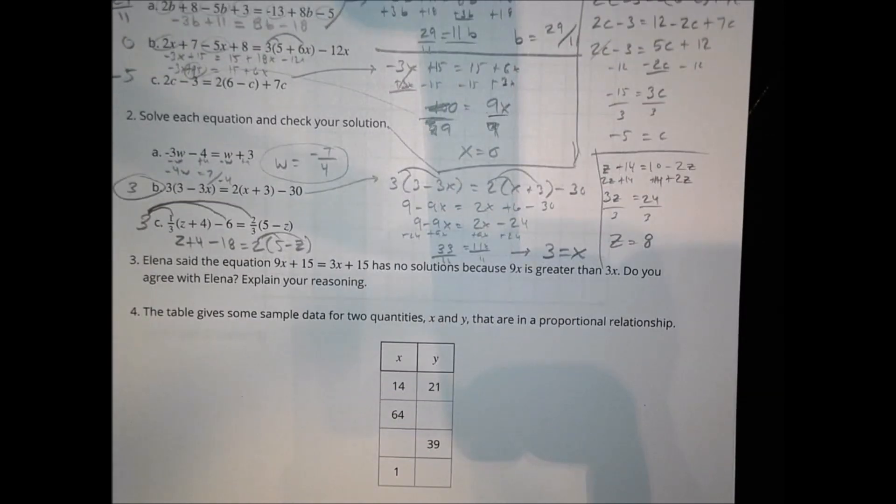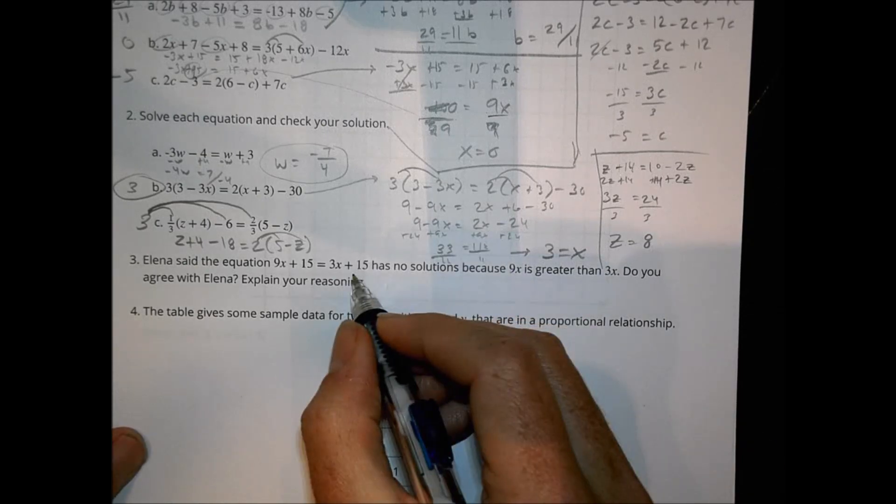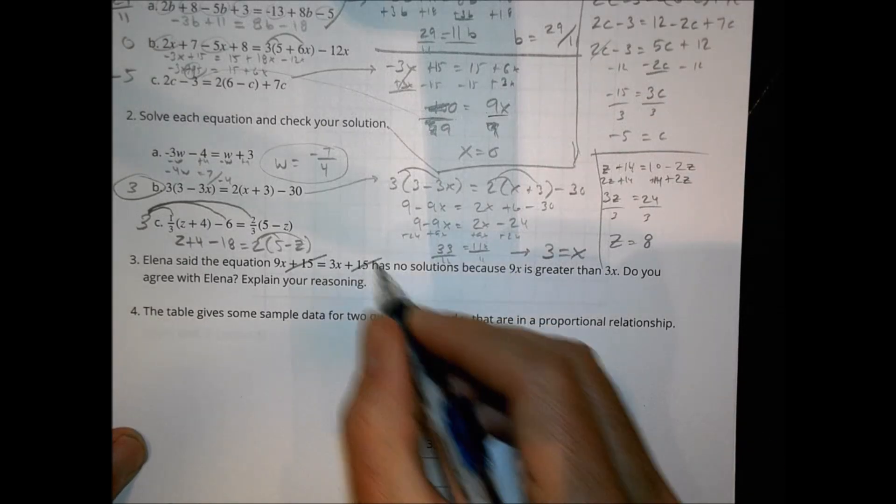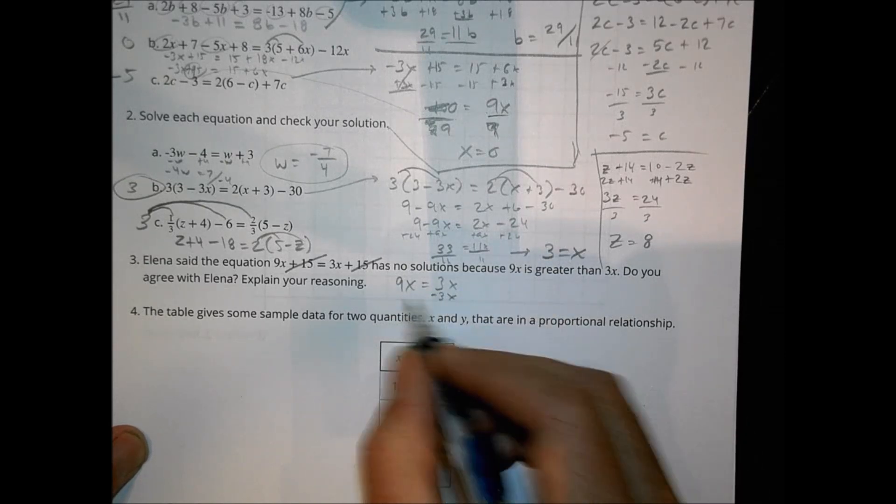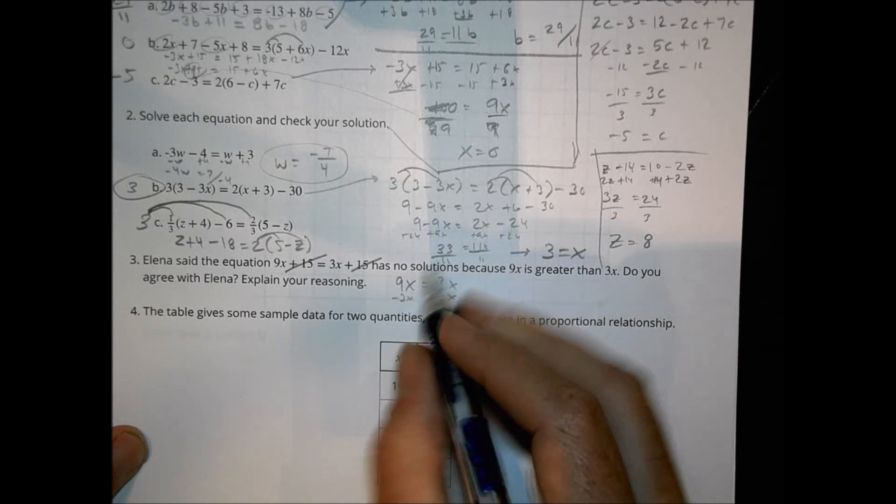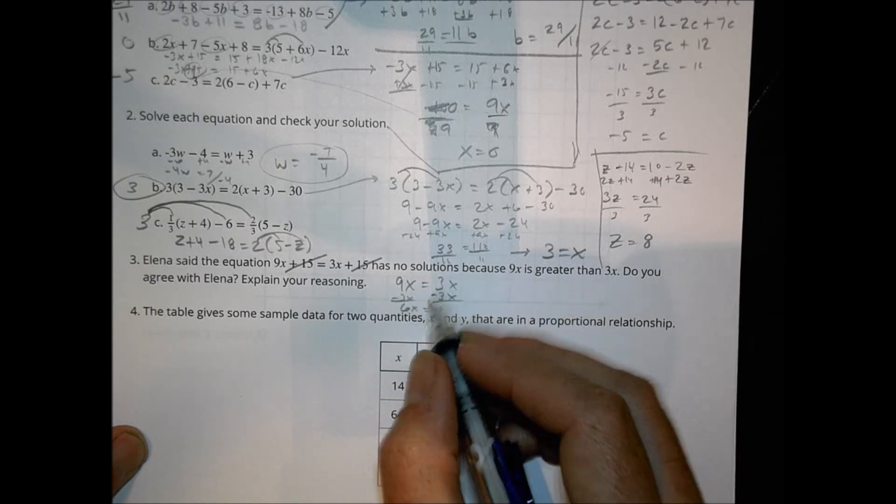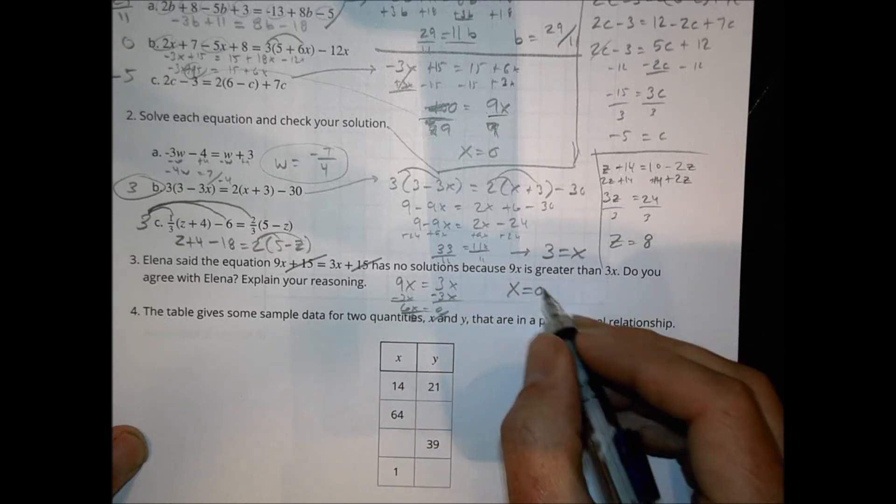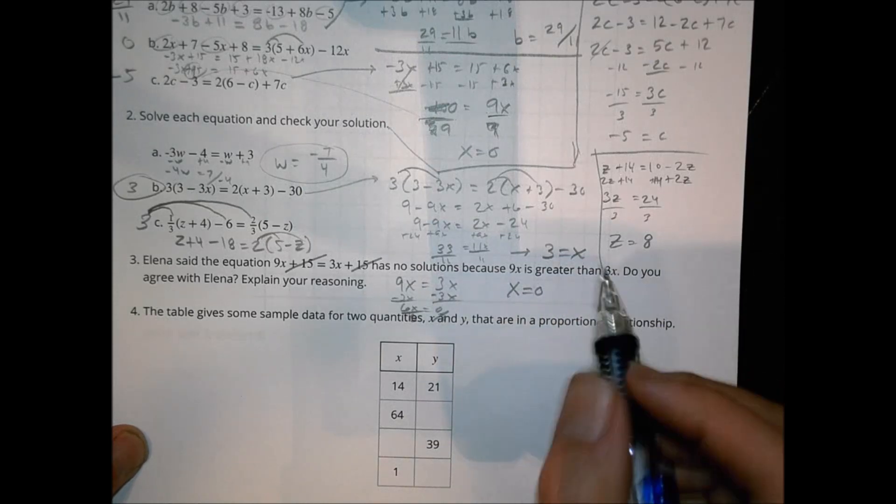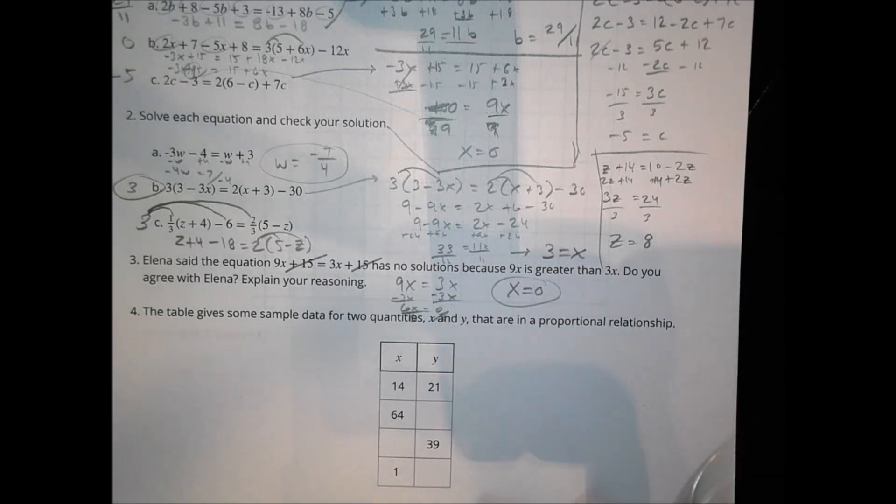Number 3. Elena said the equation 9X plus 15 equals 3X plus 15 has no solutions because 9X is greater than 3X. Do you agree? Well, here's the thing. If we subtract 15 from both sides, then I'm left with 9X equals 3X. Let's subtract 3X from both sides so that now I have 6X equals 0. Divide both sides by 6. 0 divided by 6 is 0. So X equals 0 is actually a solution. So there is a solution. It's just going to be a 0 solution where X equals 0.